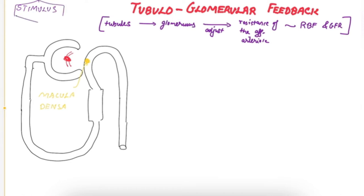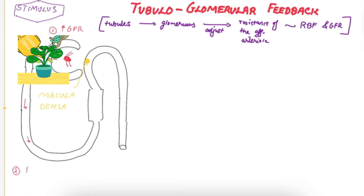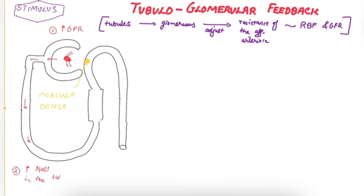Now, what is the stimulus for tubuloglomerular feedback? The stimulus is an increase in GFR. Whenever filtration increases, this cascade is set into motion. Take the analogy of watering a plant — the plant is growing normally, but when a stimulus comes it grows faster. So when there is an increase in GFR, there is an increase in NaCl delivery to the tubular fluid, and then an increase in NaCl delivery to the macula densa.